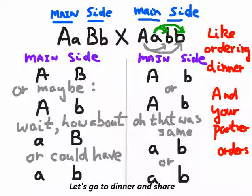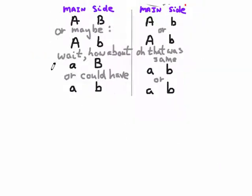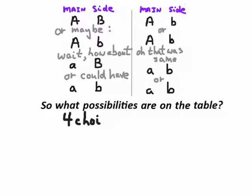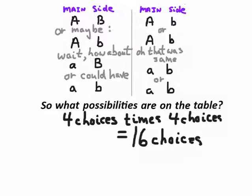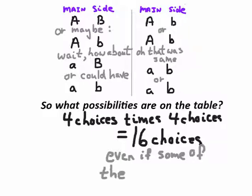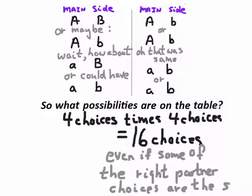Let's see what happens now when we share and combine our meals. How many different combinations could we possibly get served? This was your possible choices and this was your partner's possible choices. There are four choices times four choices — 16 possible combinations. Because you've got four choices and your partner has four choices, and four times four is 16, even if a couple of them are the same for the partner.